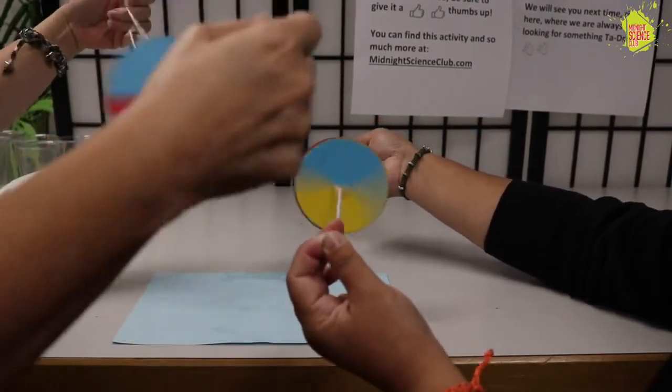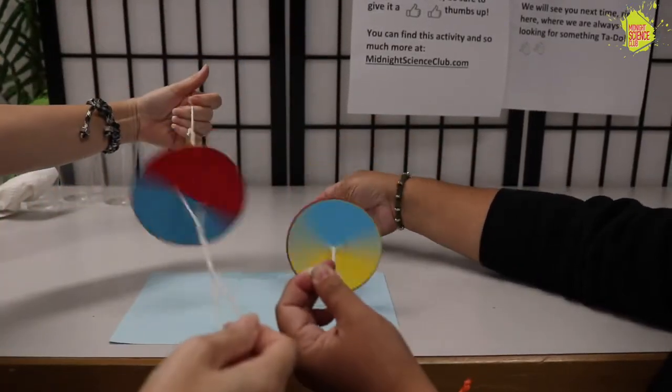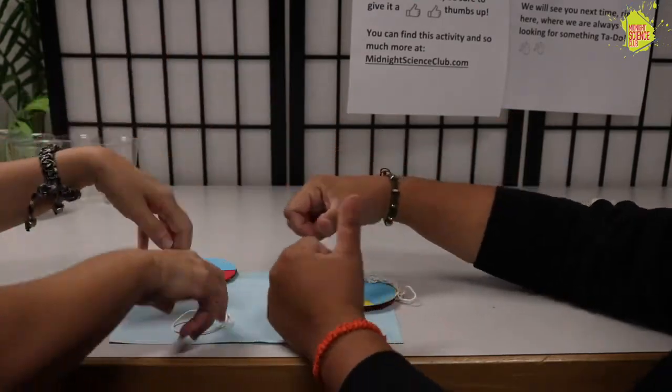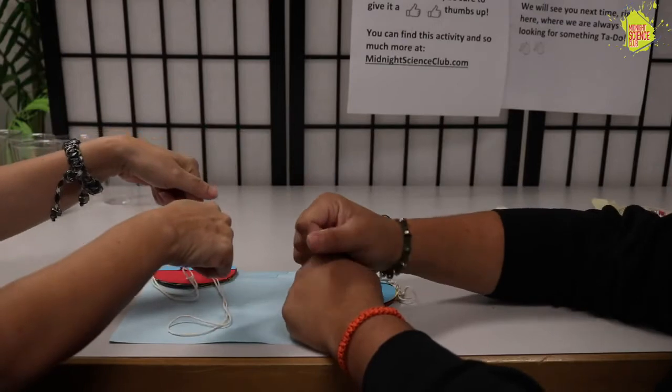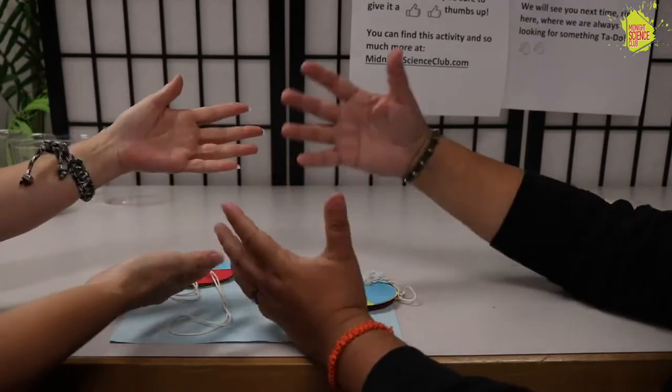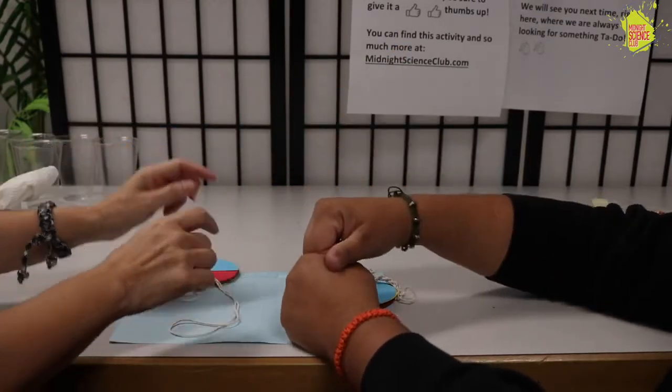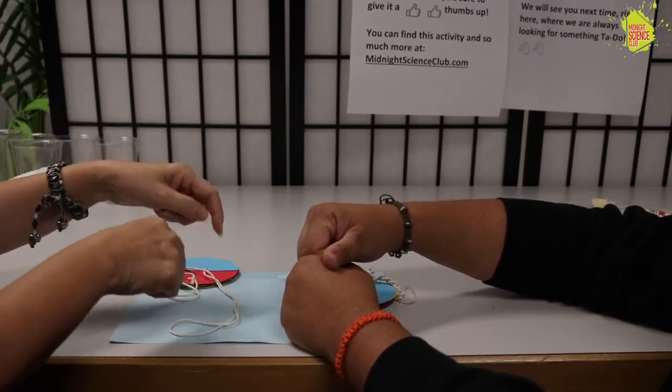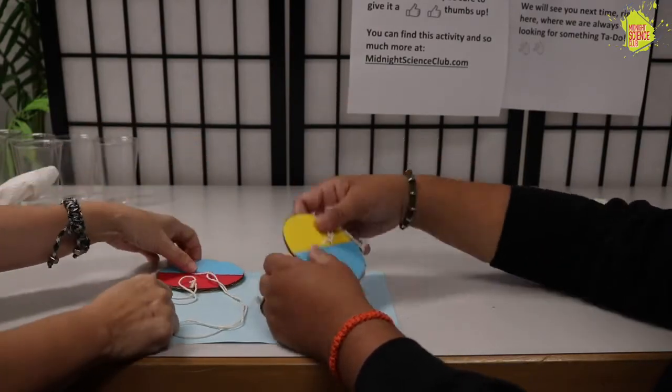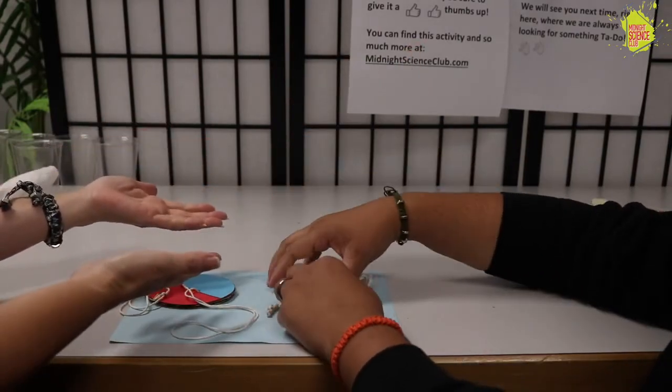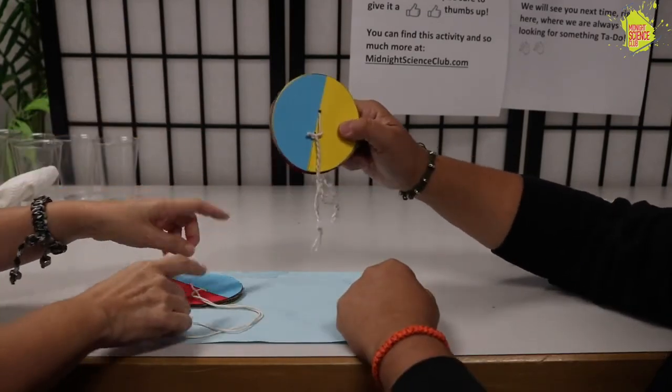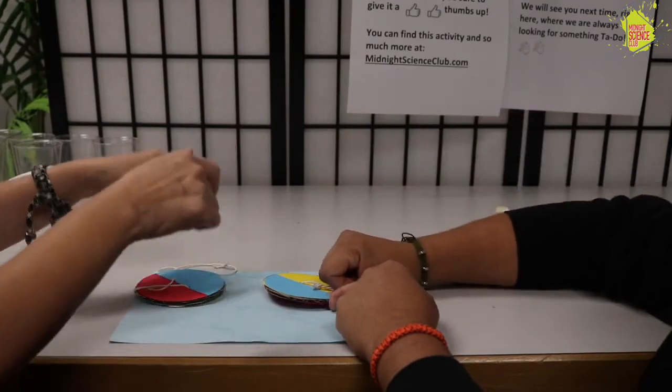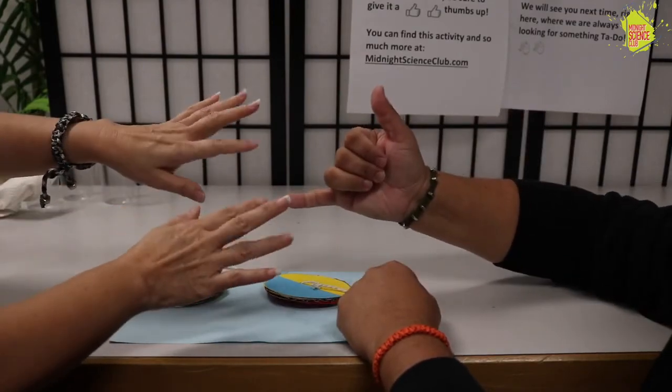So while we are going to get some practice in with our color mixing wheel, guys, if you liked this project as much as we did, make sure to give it a thumbs up. You can leave any ideas that you may have on our next activity that we should do at Hands on Science. Leave those ideas below in the comments. You can find this activity and so much more at MidnightScienceClub.com. And we'll even leave the template for the color mixing wheel in the description below. We'll see you next time. Bye.